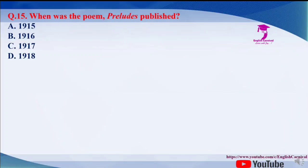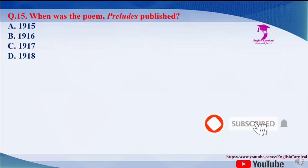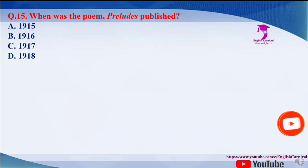Question number 15: when was the poem Preludes published? In which year was this poem published? The options are A. 1915, B. 1916, C. 1917, and D. 1918. The correct answer is C, that is 1917.